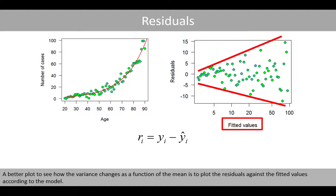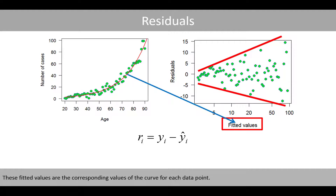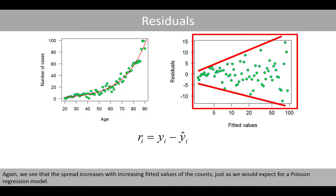A better plot to see how the variance changes as a function of the mean is to plot the residuals against the fitted values according to the model. These fitted values are the corresponding values of the curve for each data point. Again, we see that the spread increases with increasing fitted values of the counts, just as we would expect for a Poisson regression model.